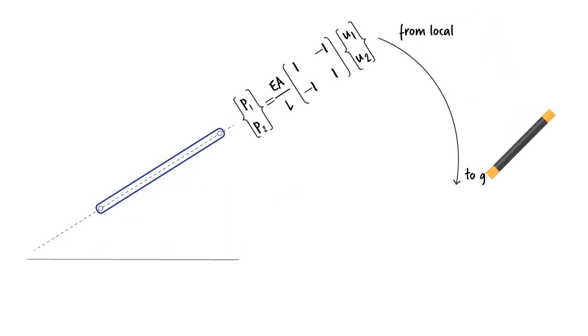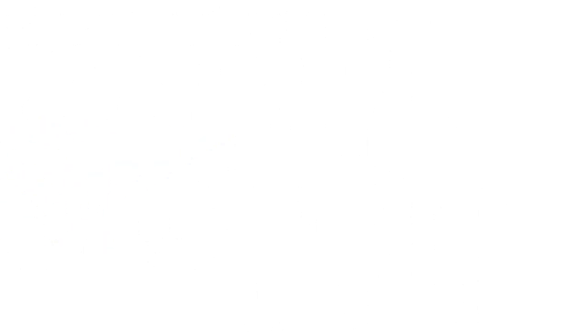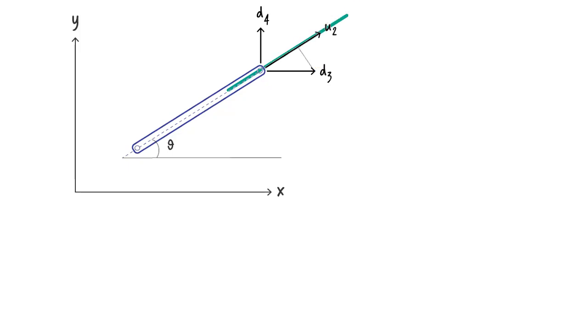When transformed, as I mentioned before, we get this system of equations. But how exactly does the local system transform into the global system? Let's take a look! In the local coordinate system, we label the displacement at this end as U2. In the global coordinate system, the same end displacement is labeled D3 and D4. This means the projection of D3 onto this axis plus the projection of D4 onto the same axis adds up to U2.